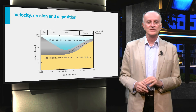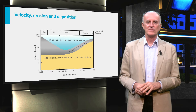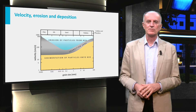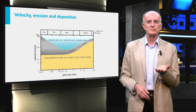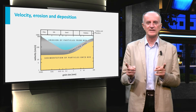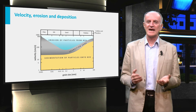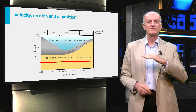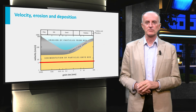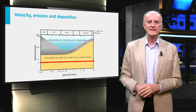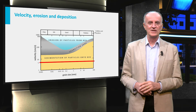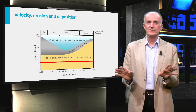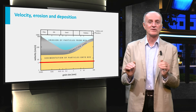A way to link the speed of water flow with erosion, transport, or sedimentation is the Hjulström diagram, in which the velocity of the water flow is plotted against the grain size. Imagine you have a river flowing at 5 cm per second. The corresponding line falls completely in the field of sedimentation, which means that the river will not be able to pick up any grain class, not even the small ones, and the river will not erode.